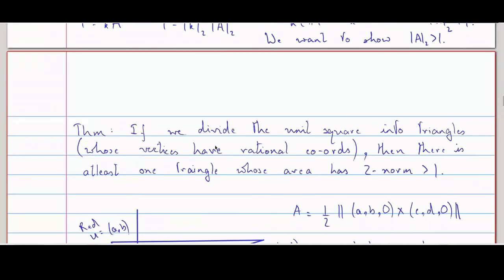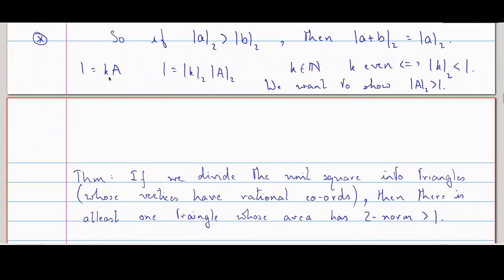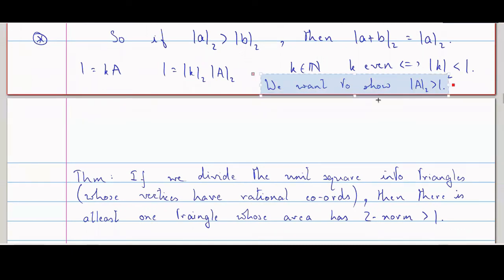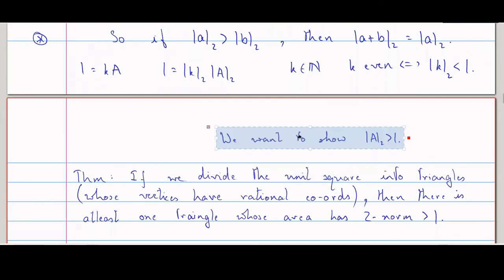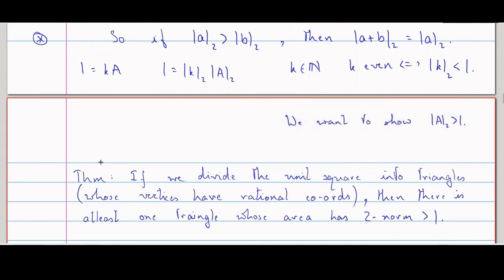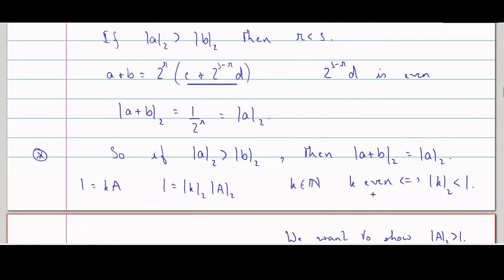Because when I divide the square into k triangles of equal area, this theorem says there is a triangle whose area has 2-adic norm greater than one. Therefore all the triangles have area with 2-adic norm greater than one. And if this is greater than one, then k must be strictly less than one in 2-adic terms — so k will be even. So we have proved Monsky's theorem.